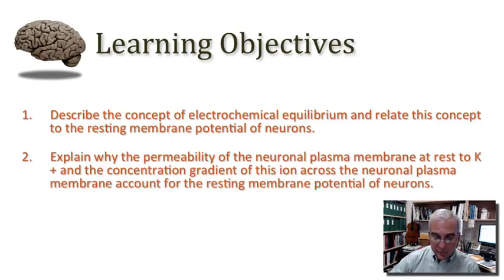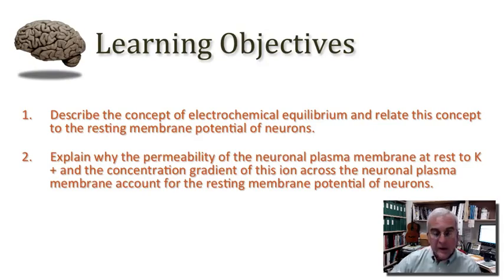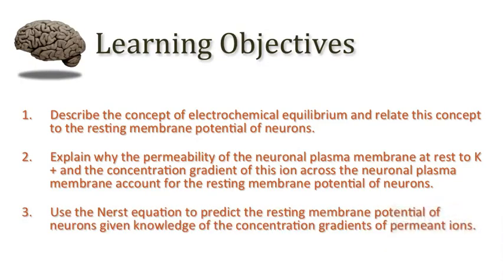I want you to be able to explain why the permeability of the neuronal plasma membrane at rest to potassium ions, and the concentration gradient of this ion across the neuronal plasma membrane, together account for the resting membrane potential of neurons. I also want to introduce something called the Nernst equation and challenge you to use it to predict the resting membrane potential, given knowledge of the concentration gradients of permeant ions.